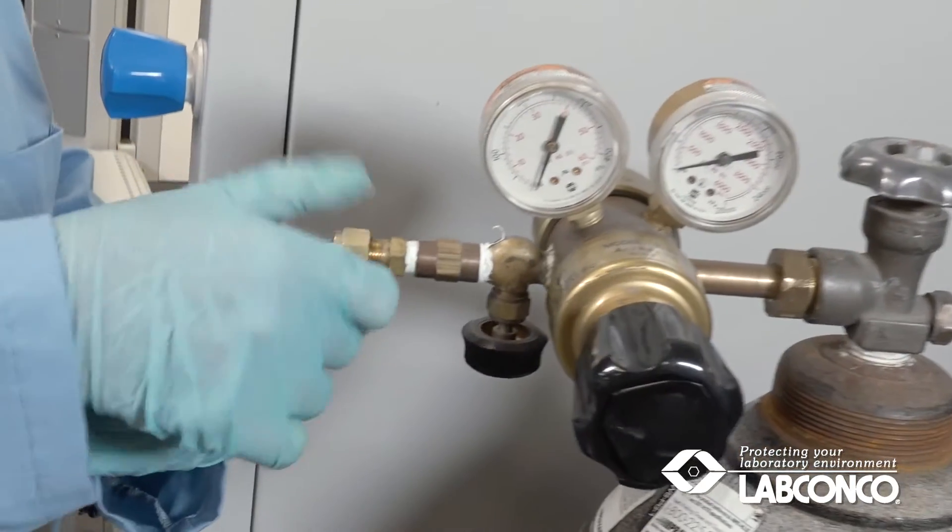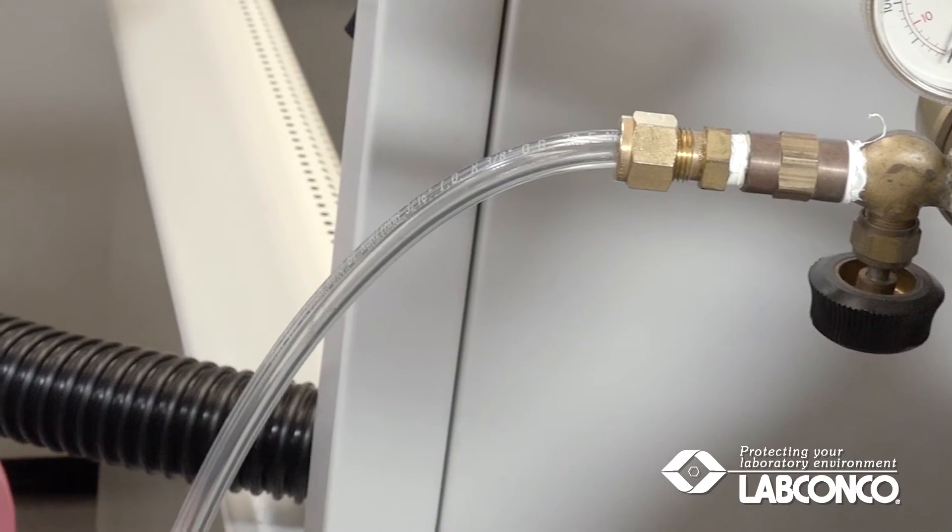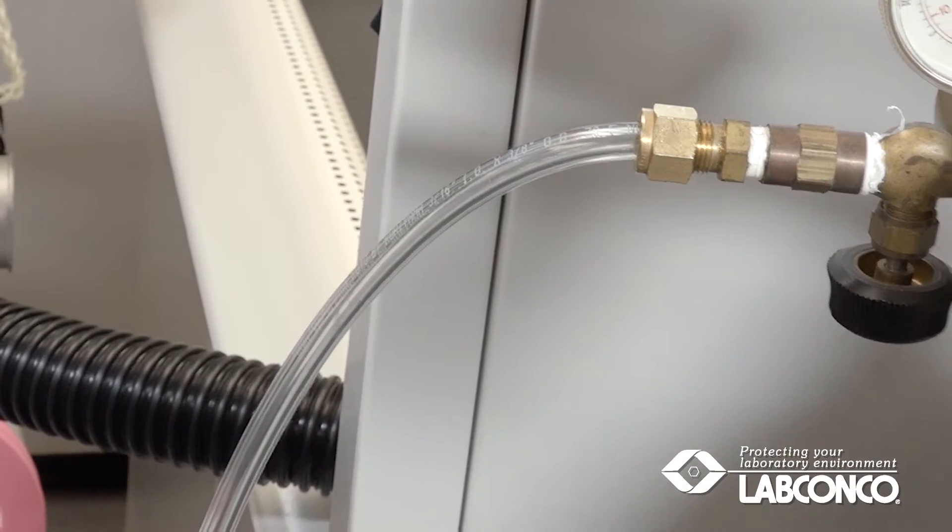Alternately, a compression fitting may be used that is suitable for a hose with a 3⅛ inch outside diameter and a 1¼ inch inside diameter.